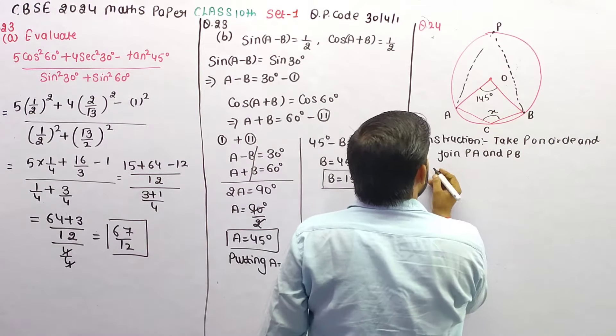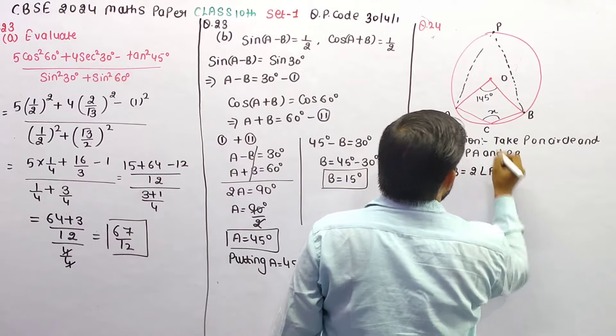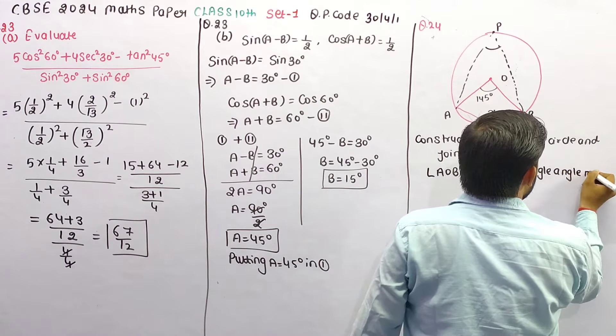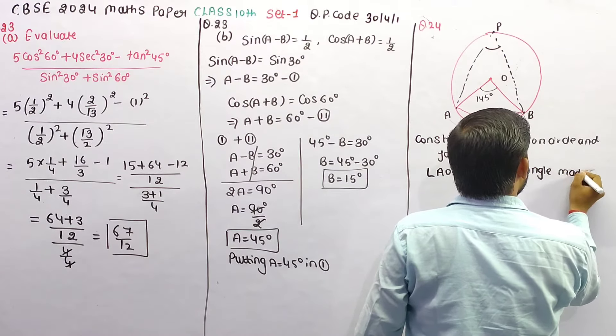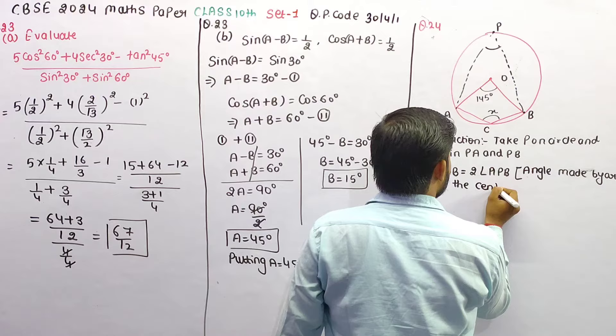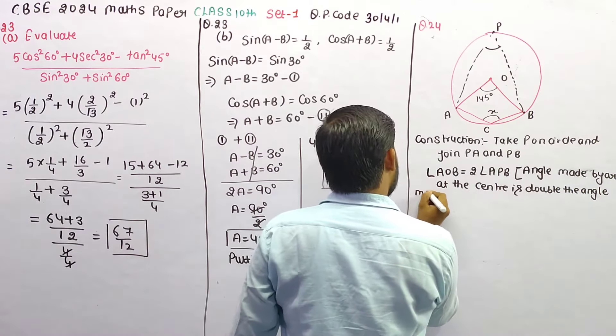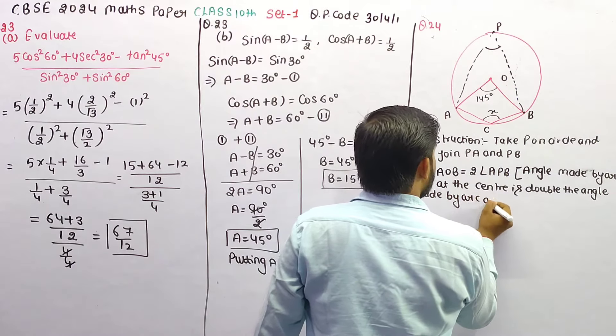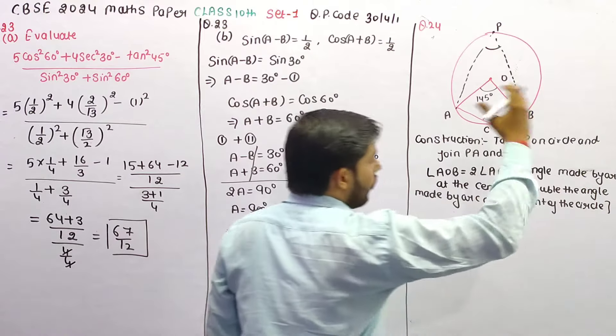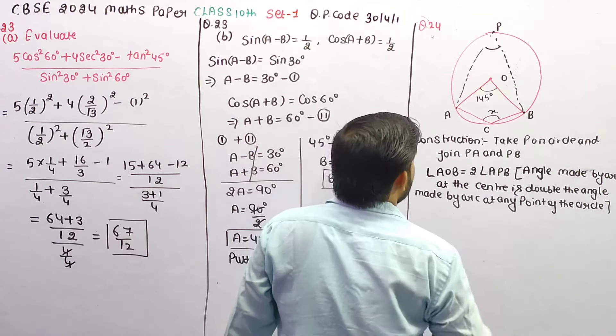See this angle, angle AOB is equal to twice of angle APB. Angle made by an arc at the center is double the angle made by an arc at any point of the circle. So AOB is double of this angle.